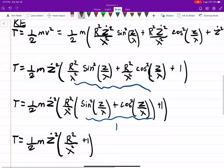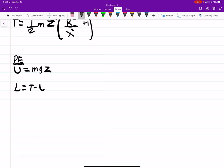So now we can do the Lagrangian, which is just T minus U - the kinetic energy minus our potential energy. And now that we have our Lagrangian, we can do the Euler Lagrange.